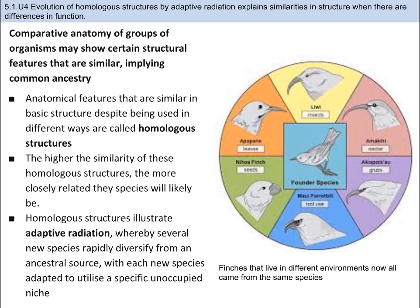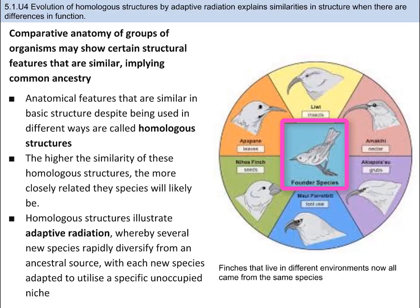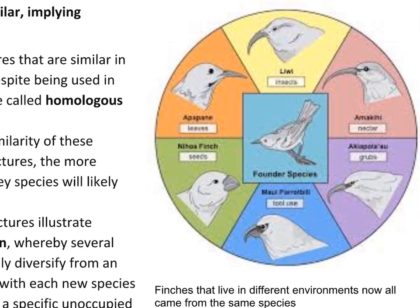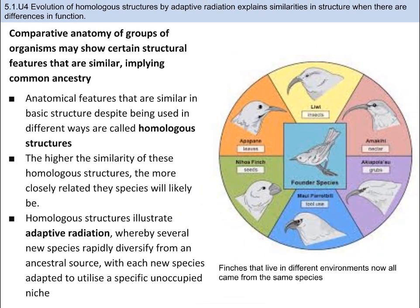Another piece of evidence for evolution are structures that look similar but may have slightly different functions. This type of evidence is called comparative anatomy. In the example here, we have some finches. The initial bird, which you can see in the middle, is called the founder. It bred and gave rise to offspring. Over time, the birds were so successful that their offspring started to inhabit different areas. Some of their beak structures changed over a long period of time, and even though the beaks have slightly different functions, they are similar enough that we could determine they are somewhat related. These are called homologous structures.